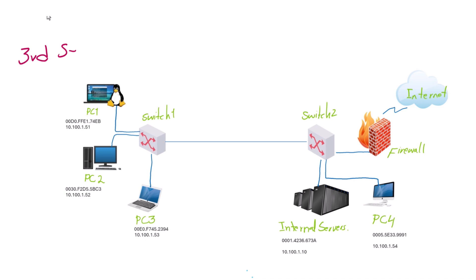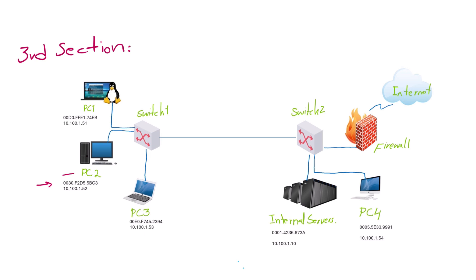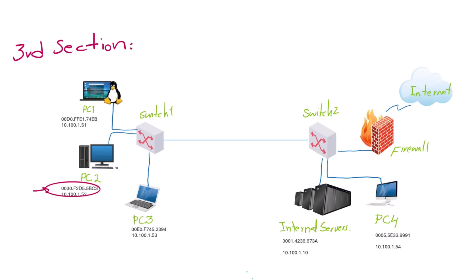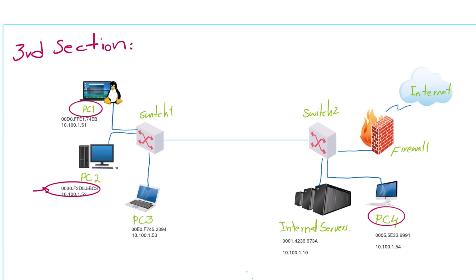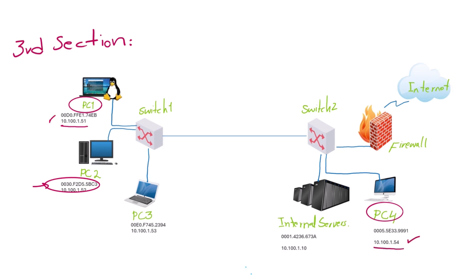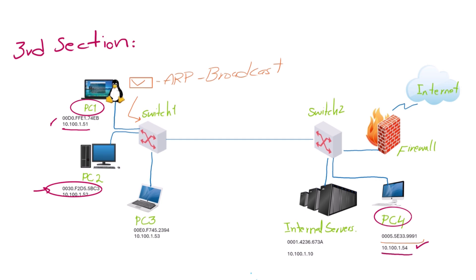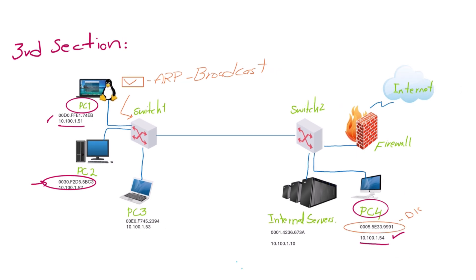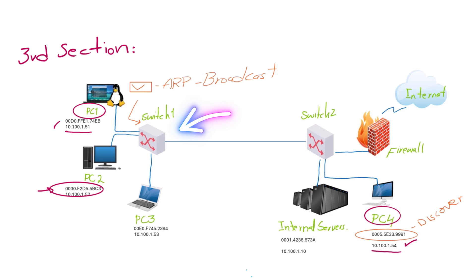Let's see the scenario of how MAC addresses are used for communication over a LAN. PC1 would like to communicate with PC4. First, it checks whether PC4 is on the same network or a different network. After finding PC4's IP address, it sends an ARP broadcast over the network to discover PC4's MAC address. When Switch 1 receives the broadcast from PC1, it forwards it out all ports except the port it received it on.